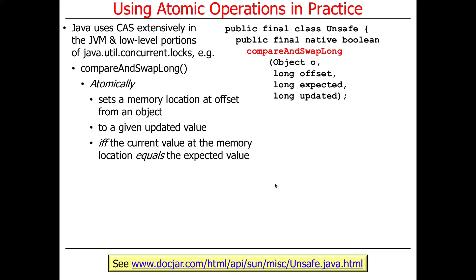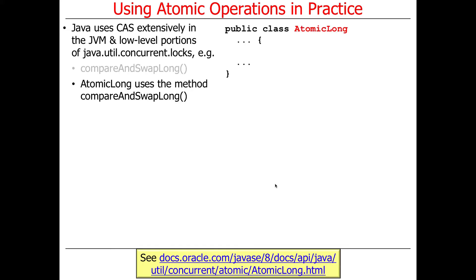Here's the method: compareAndSwapLong. As you can see, it's part of the Unsafe class, which you don't get direct access to, but many parts of Java class libraries do get access to it. It takes four parameters: expected and updated — we already talked about those — and object and offset, which are a little bit different. I'll talk about how that works in a second.